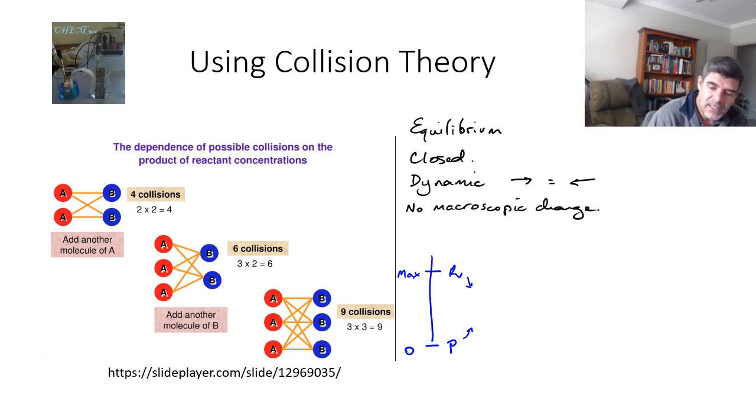At some point, there may be sufficient energy for the particles of product to actually interact with one another and reform the reactants. The numbers of particles are very important, and so are the combinations.